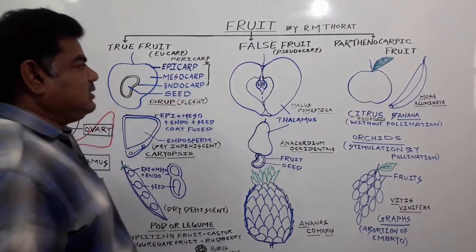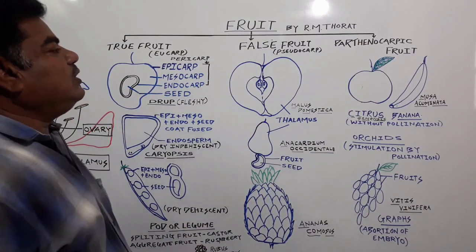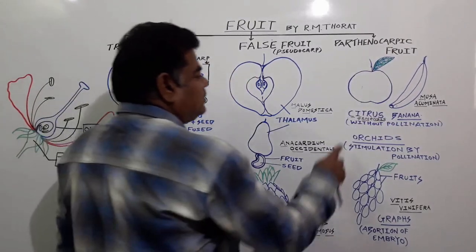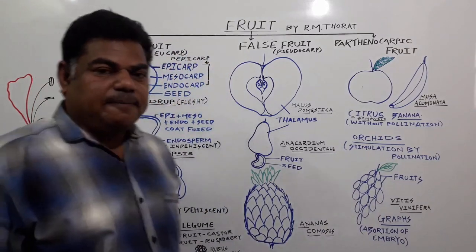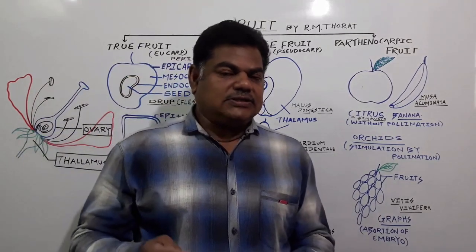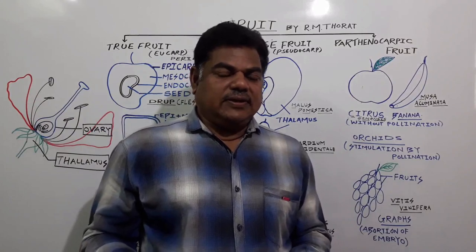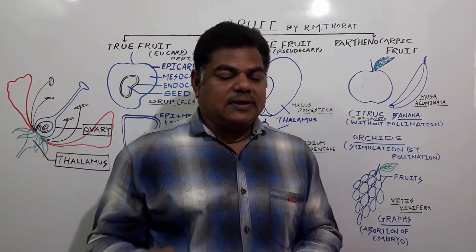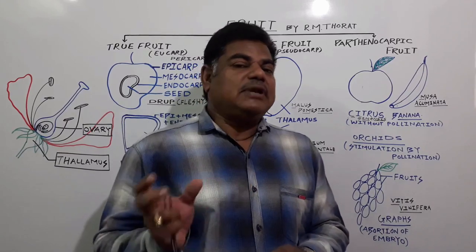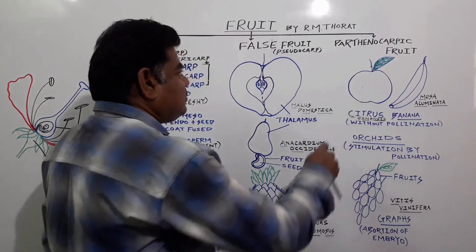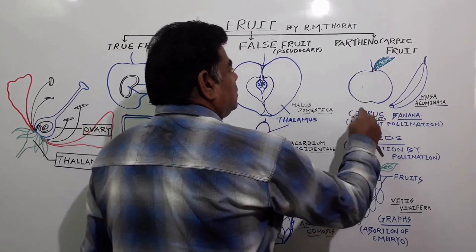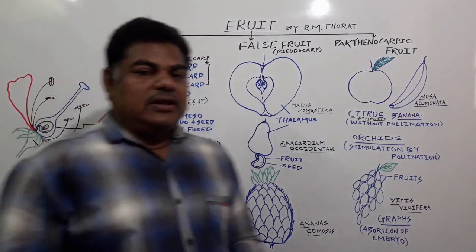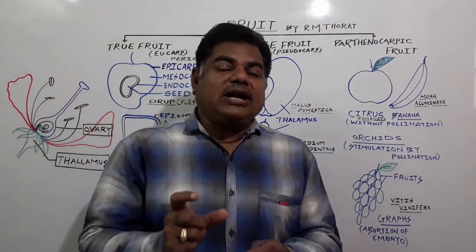The third type of fruit is the parthenocarpic fruit. For example, in the case of Citrus sinensis, many species exist — one we call orange, second we call lemon. This type of fruit is called hesperidium. In these fruits, fruit formation takes place without the act of fertilization. Such fruits we call parthenocarpic fruits.